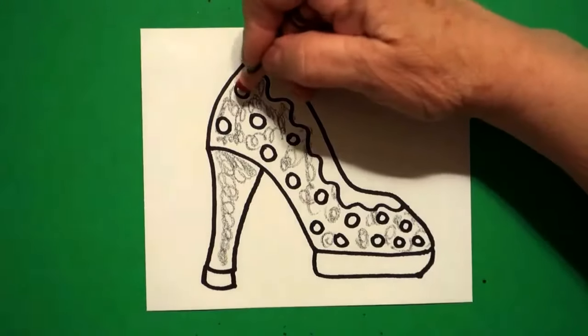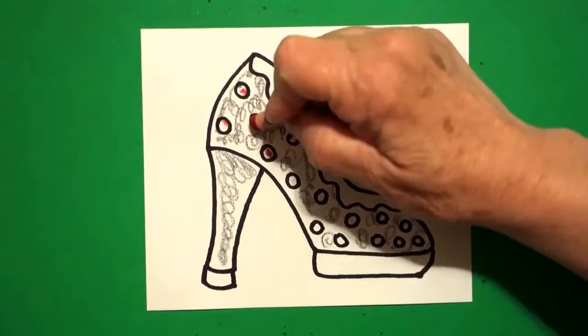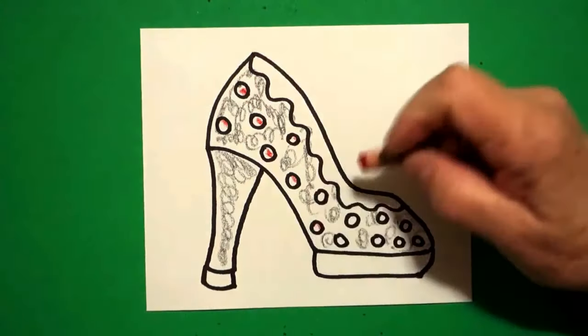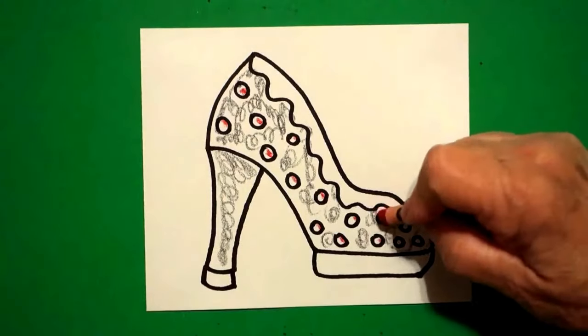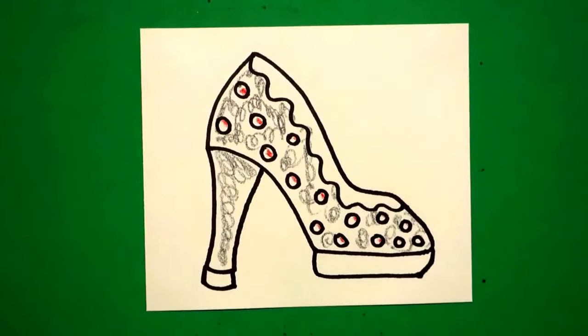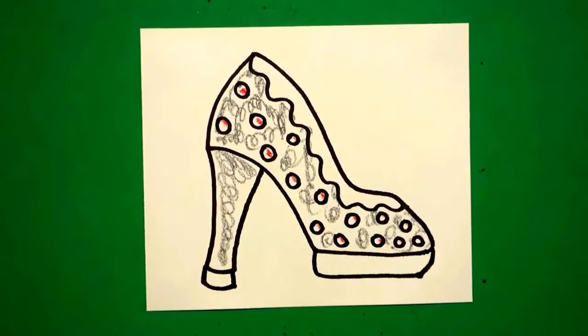Now with my red, I'm going to come in and I'm going to do the inside sections of all of my baby circles or my polka dots. Now, you can use different colors to decorate your high heels. The other thing you can do is eliminate all the polka dots and make this pink and you have Cinderella's shoe. Let's see what this looks like all colored in.